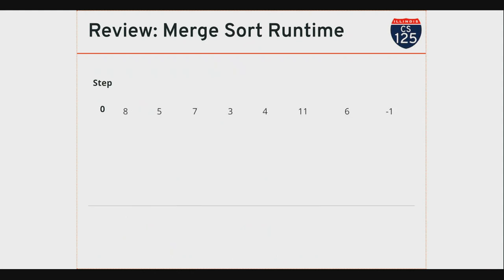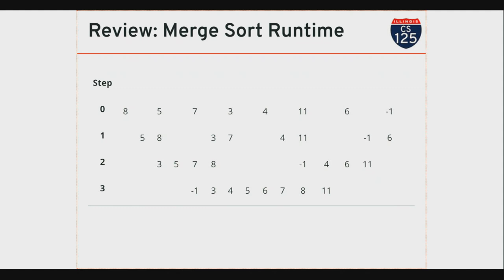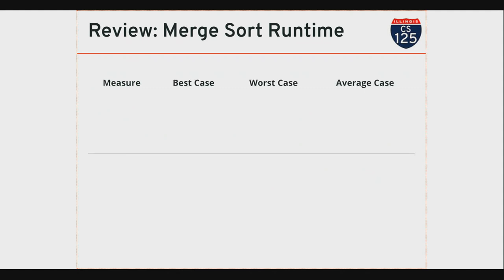Here's another way to think about it: I start with eight arrays that are totally unsorted; now I have four sorted arrays of size two; now two sorted arrays of size four; now one bigger array. Three levels, which is log base two of eight. That's merge sort runtime. It's important because we're about to see another algorithm that performs similarly, although with more variation.